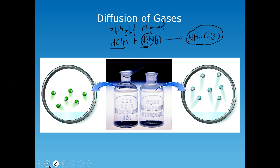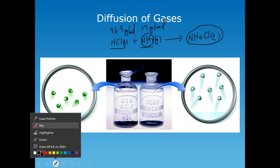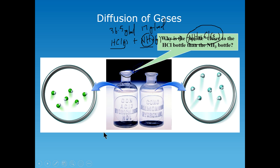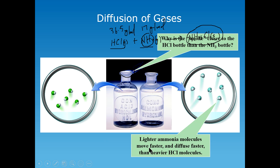So that basically explains why that happens. We understand it based on the fact that the ammonia molecule is the lighter of the two. The light ammonia molecules move faster and diffuse faster than the heavier HCl molecules, and therefore come into contact closer to the source of the hydrogen chloride molecule, so the ammonium chloride is formed at the mouth of the bottle of the hydrochloric acid.